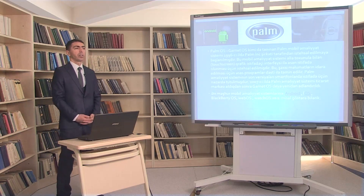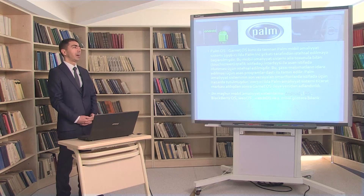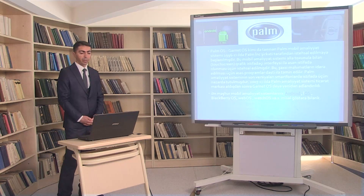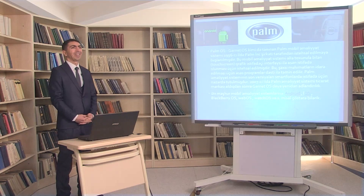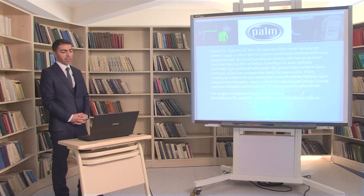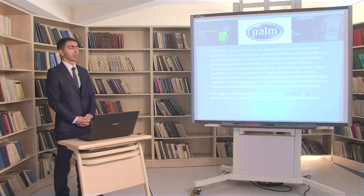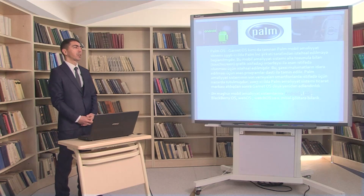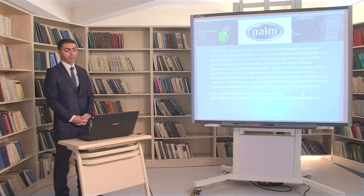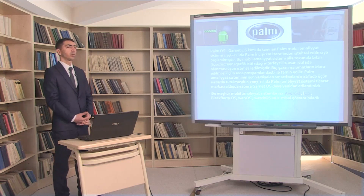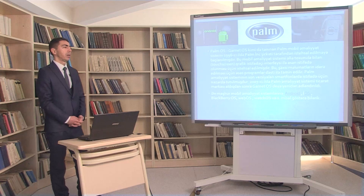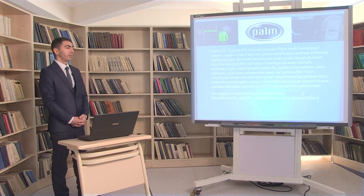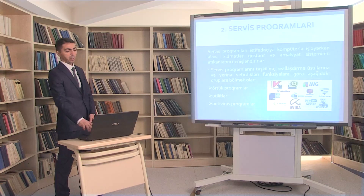Mobil əməliyyat sistemlərindən danışarkən Palm və GarntOS kimi də tanınan PalmOS mobil əməliyyat sistemini misal göstərə bilərik. Bu əməliyyat sistemi 1996-cı ildə Palm şirkəti tərəfindən istehsal edilməyə başlamışdır. Toxunma ekranlı qrafik istifadəçi interfeysi ilə asan istifadə üçün hazırlanmışdır. 2007-ci ildə ticarət markası aldıqdan sonra GarntOS kimi tanınmağa başladı. Ən məşhur mobil əməliyyat sistemlərindən Android, iOS, BlackBerry, WebOS, WatchOS misal göstərə bilərik.